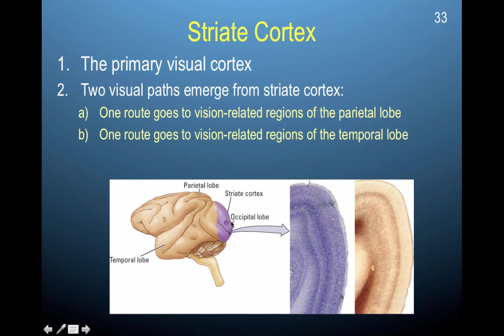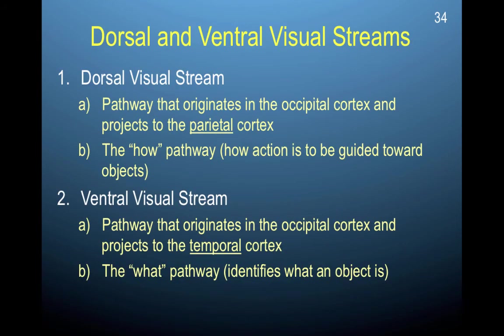Two visual paths emerge from the striate cortex. One route goes to vision-related regions of the parietal lobe, and one route goes to vision-related regions of the temporal lobe — you can see both paths illustrated here. This pathway from V1 to these separate streams is known as the dorsal stream and the ventral stream.